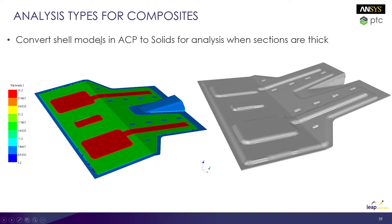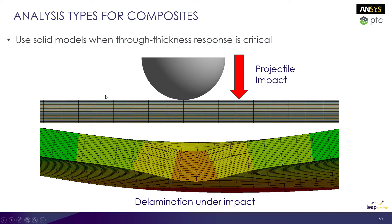What we can do in this circumstance is use the Convert to Solids tool in ACP and generate a solid model out of our shell model and layup definition. This is the thickness distribution in our solid model represented by the color contour on our shell. Another application where this solid modeling approach is critical is when the through-thickness response of your structure is critical — for example, applications where delamination is occurring, like in an impact situation. Using solid elements for all of the individual plies through the thickness, we can actually capture the ply separation, which isn't possible with a single shell element.